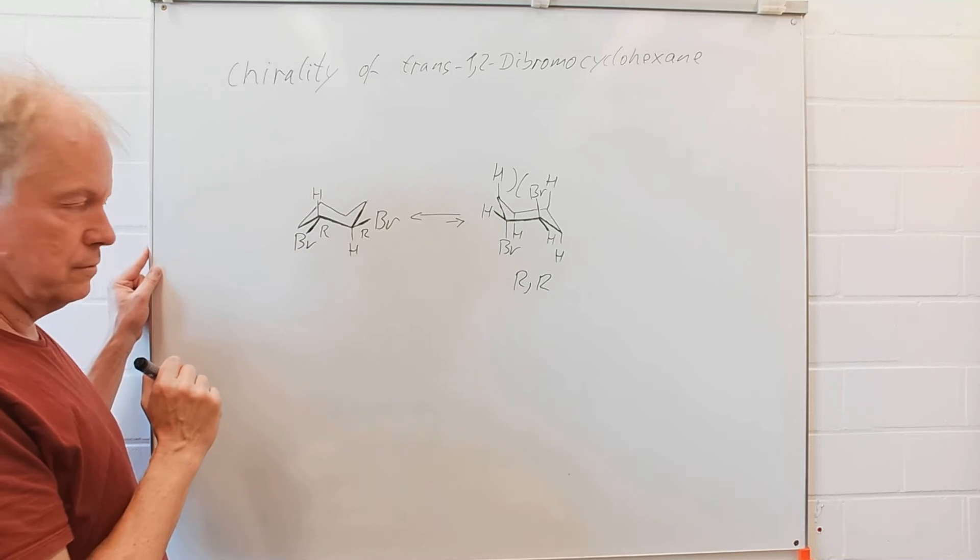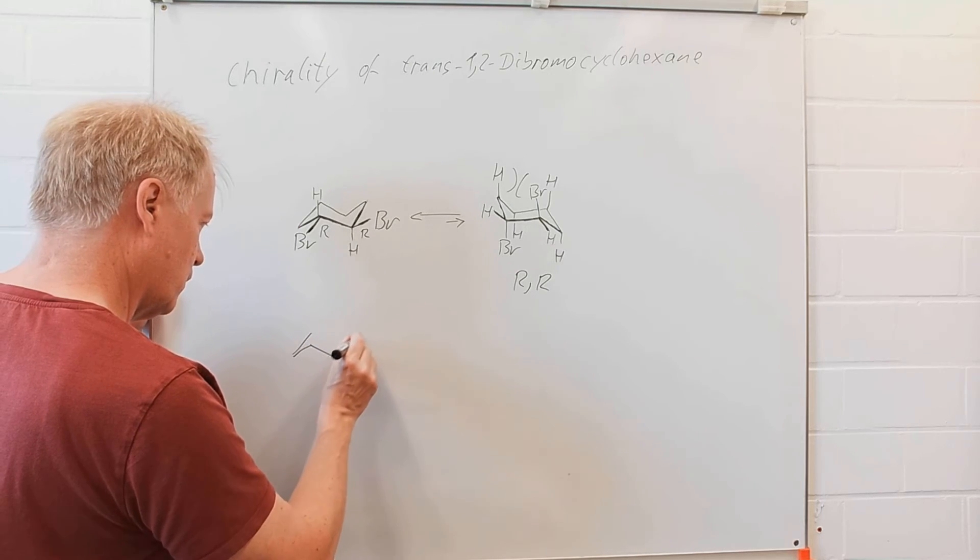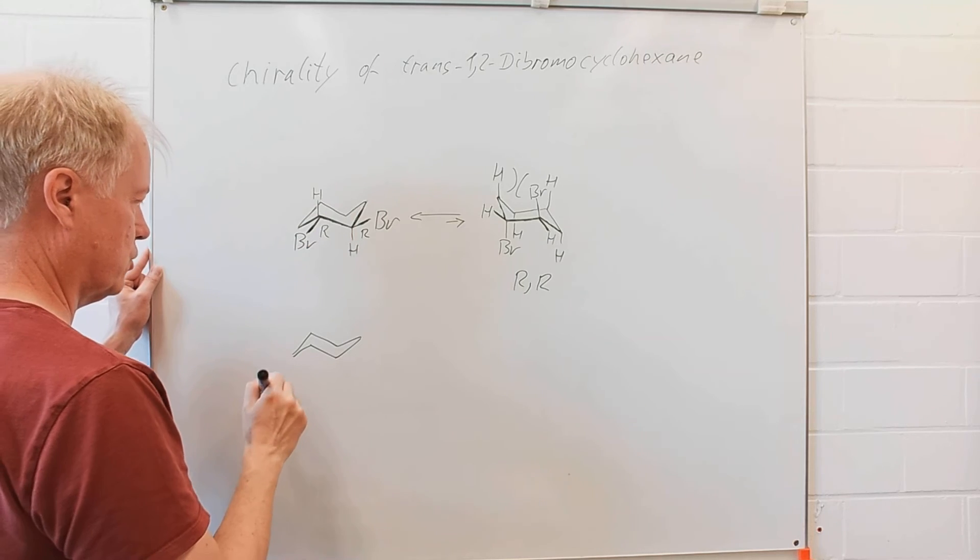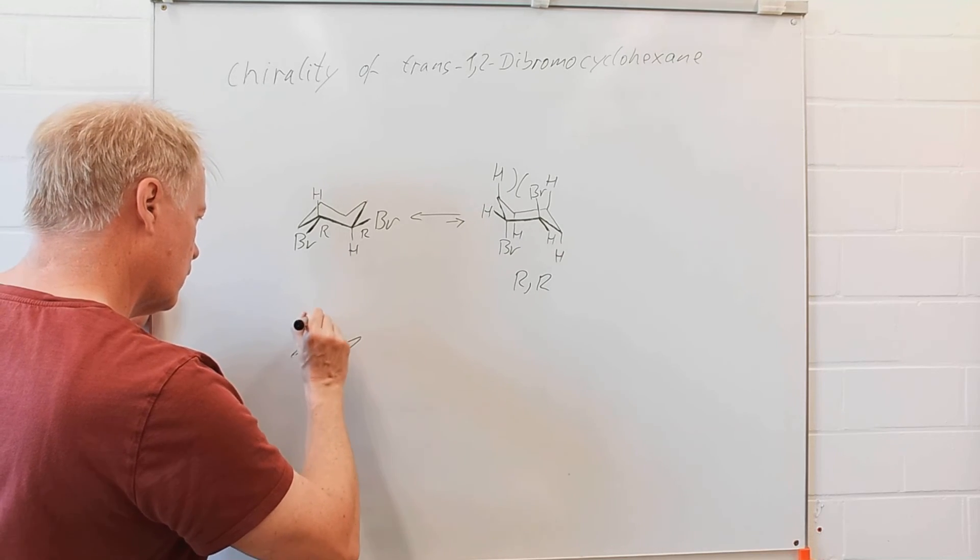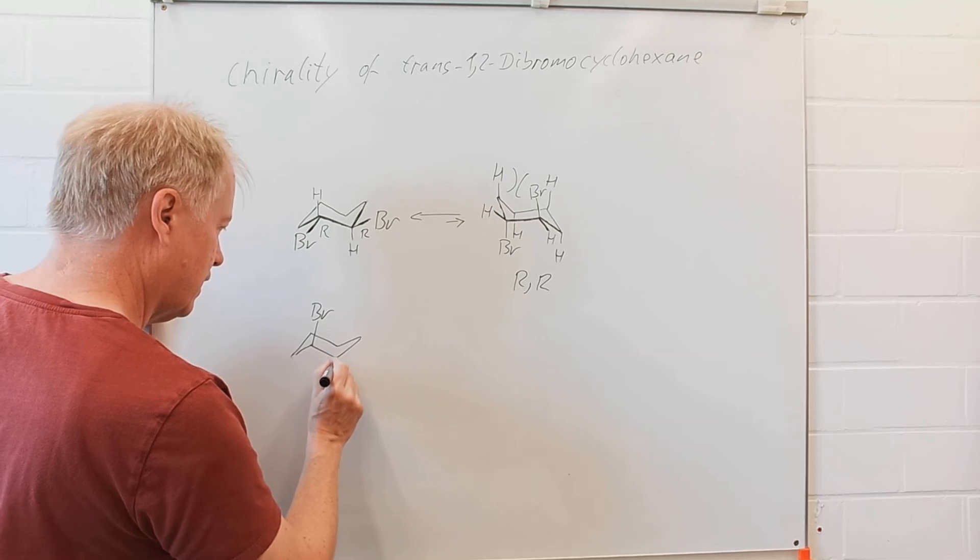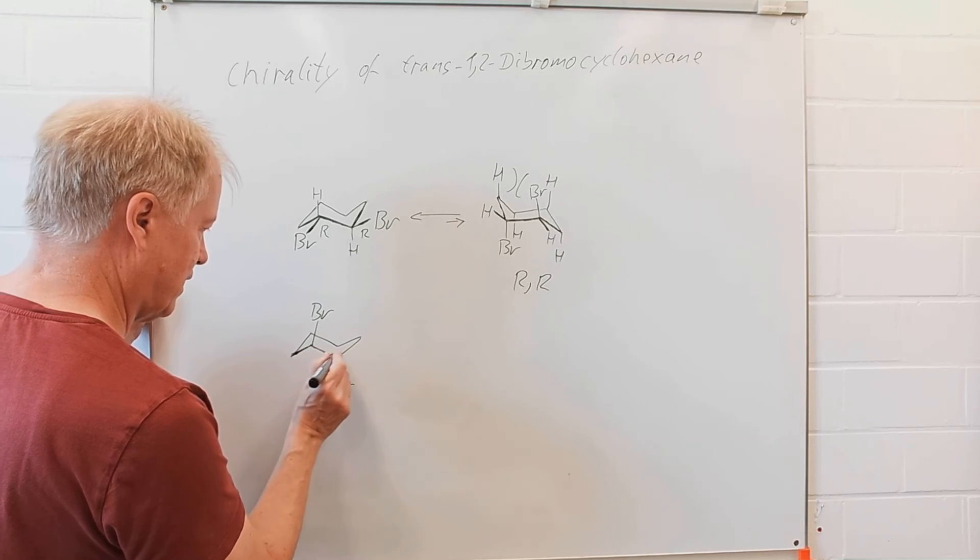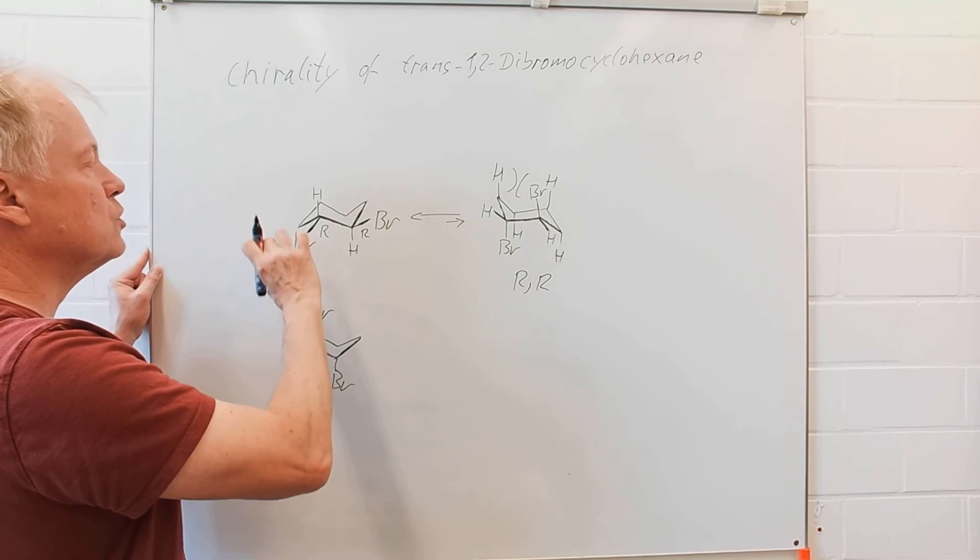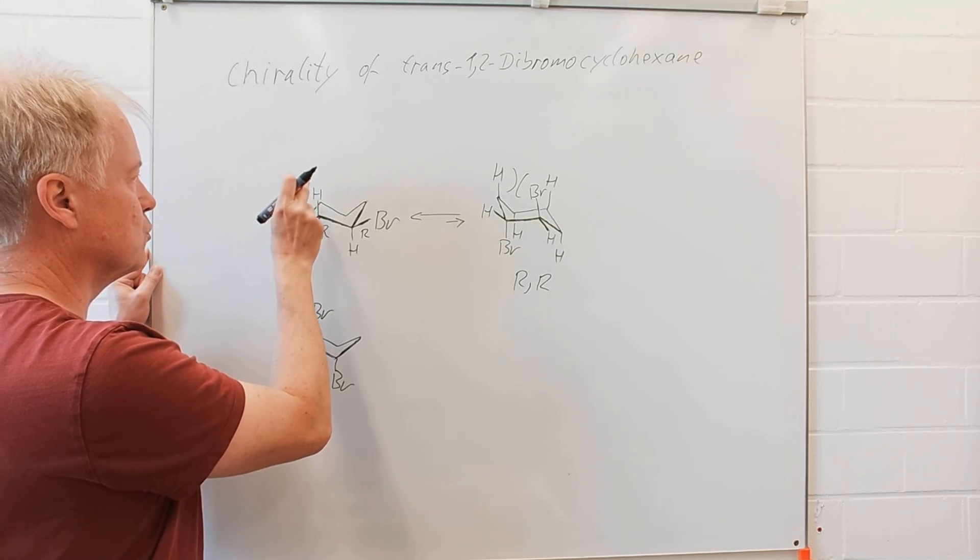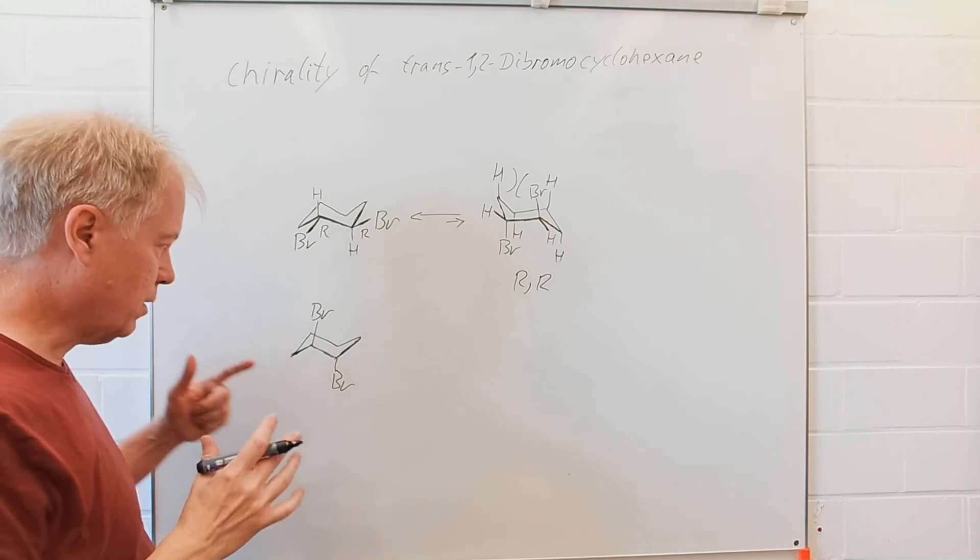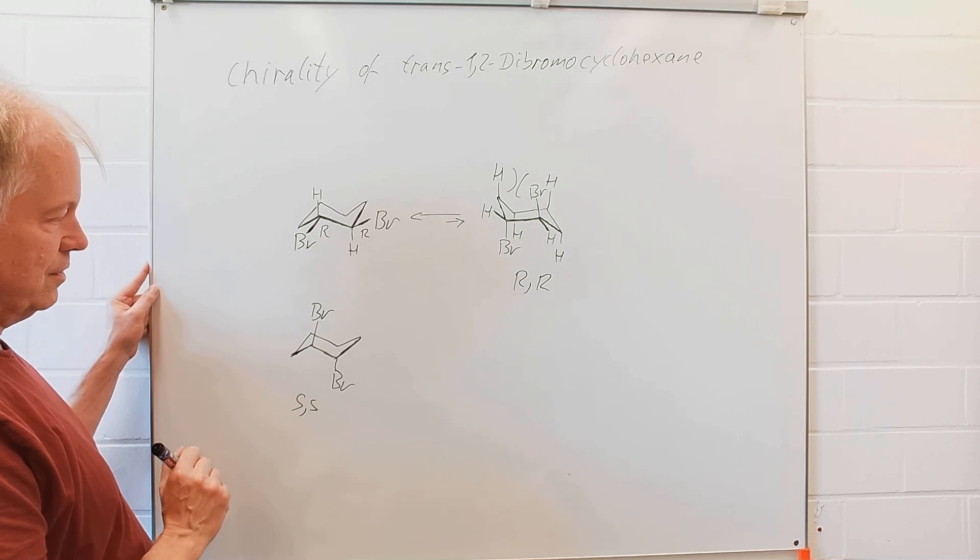Very often one makes the mistake that if one wants to transfer this structure to the one that has the two bromines in axial position, one tends to simply change the position from the bromine in the equatorial position to the axial position. But this is wrong, since in this case it would be the SS enantiomer.